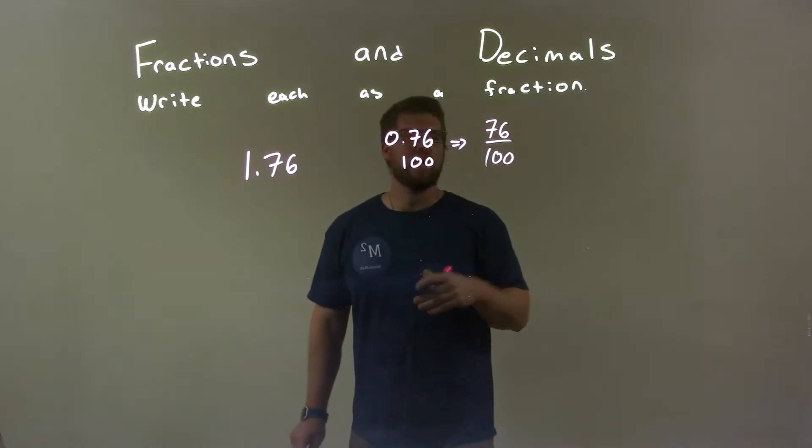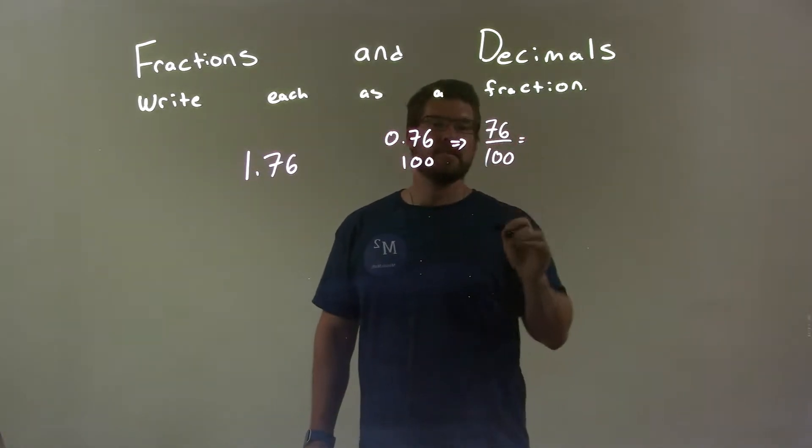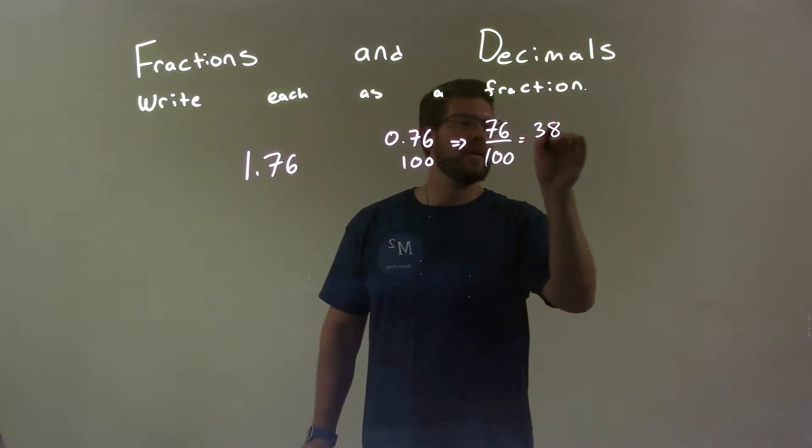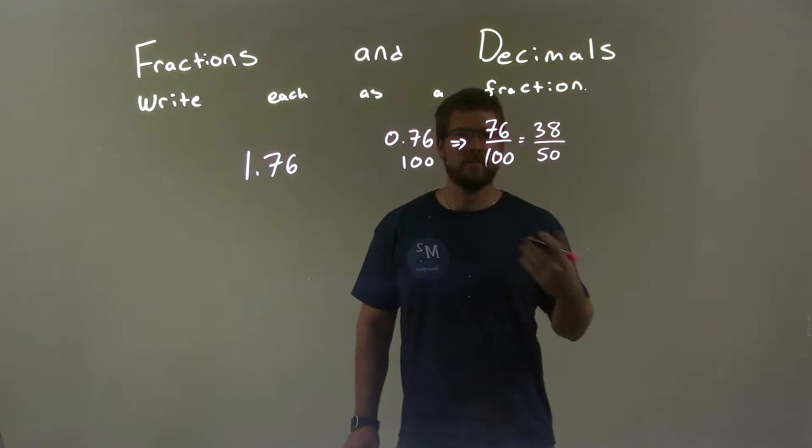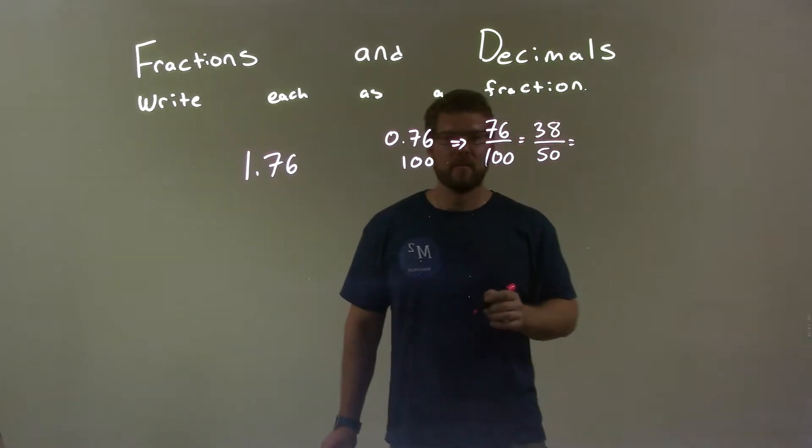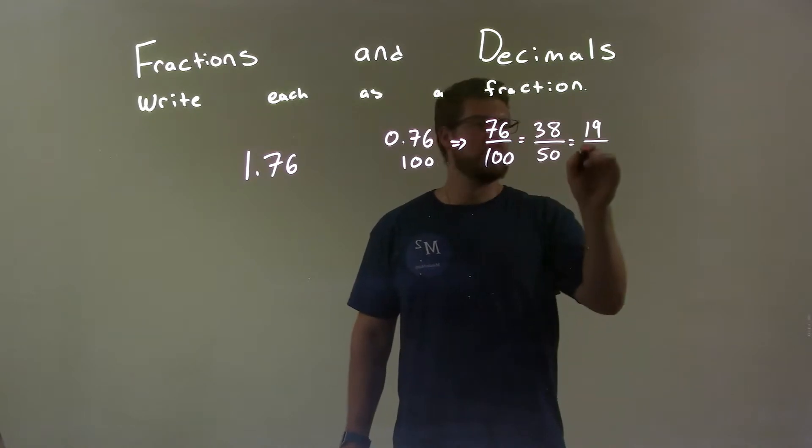Okay. Well, can I simplify this? Well, both of these are divisible by 2, right? 76 divided by 2 is 38, and 100 divided by 2 is 50. Well, both of these numbers are also divisible by 2. 38 divided by 2 is 19, and 50 divided by 2 is 25.